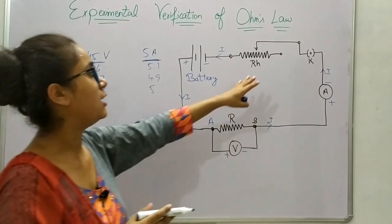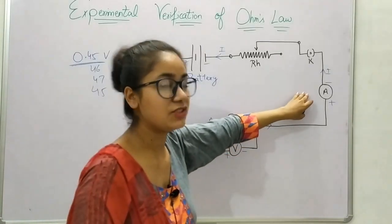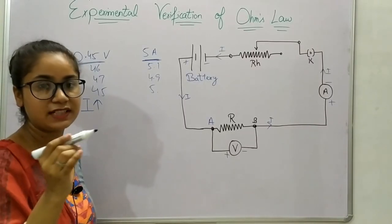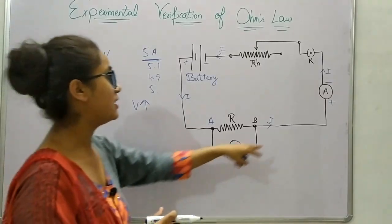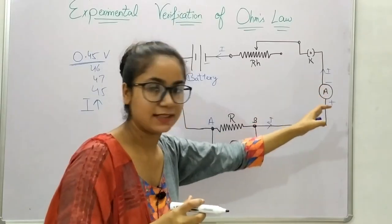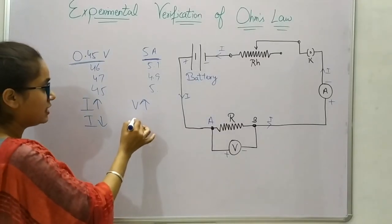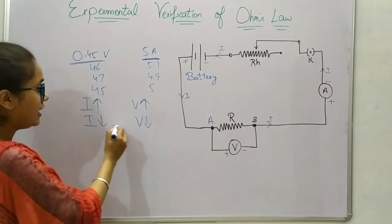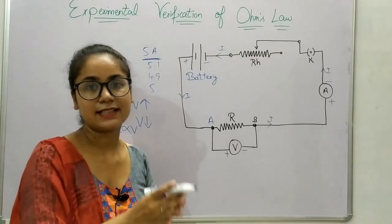When you change the resistance in the rheostat, there will be a change in the readings of the voltmeter and ammeter. As the current increases, the reading of the potential difference on the voltmeter also increases. Similarly, as the current decreases, there is a decreased reading on the ammeter and a decreased reading of the potential difference on the voltmeter. This explains that current I is directly proportional to voltage V, which is what we studied in the statement of Ohm's law.